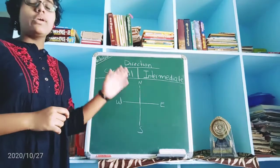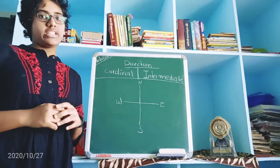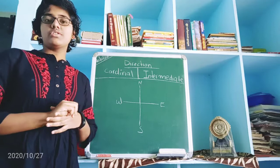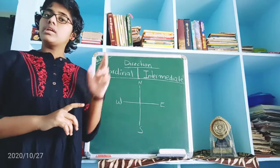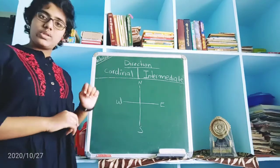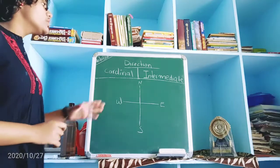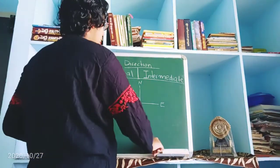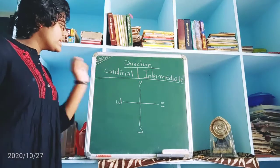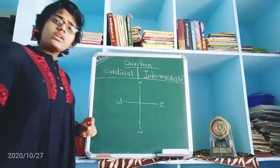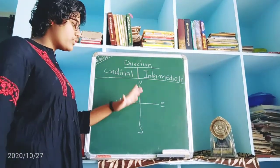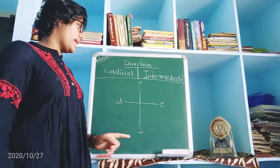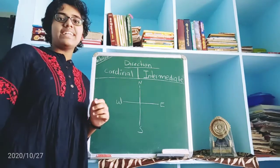In this video we are going to learn about directions. There are 4 directions: North, East, West, and South. These 4 directions on a map are known as cardinal directions. There are also another 4 directions, known as intermediate directions.